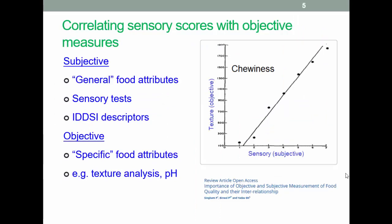So texture analysis provides an objective measure of the characteristics of food. There's a graph there of chewiness based on texture and a sensory subjective measure. As we'll see, chewiness has a specific definition, of which more in a little while. Such objective measures can be used to validate subjective measures such as those from consumer testing.